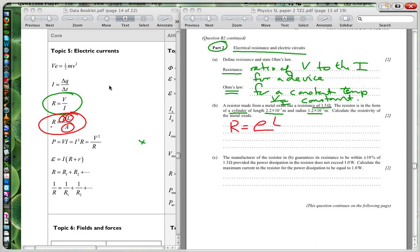R equals rho L over A. Now I'm actually wanting to calculate the rho here, the resistivity. So obviously it's going to be rho is equal to the resistance times the cross-sectional area divided by L. Now I've just got to be a little bit careful here.